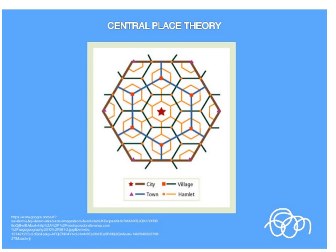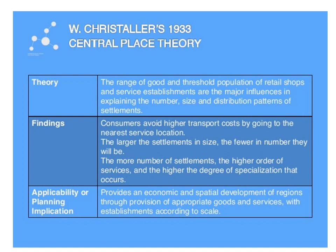The central place theory considers the relationship between city, village, town and hamlet. It was proposed by Christaller in the year 1933. It states that the range of goods and threshold population — hospital shops and service establishments — are the major influences in explaining the number, size and distribution pattern of settlements. The finding of this theory was that consumers avoid higher transport costs by going to the nearest service location. The larger the settlement in size, the fewer in number they will be. Higher order settlements provide higher order services and greater specialization, providing economic and spatial development of regions.